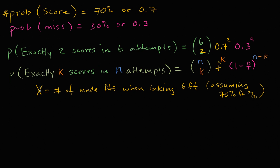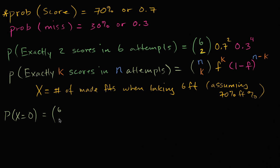So let's figure out the probabilities of the different values that x could actually take on. What is the probability that x is equal to zero — that even though you have a 70% free throw percentage, you make none of the shots? This is going to be six choose zero, times 0.7 to the zeroth power, times 0.3 to the sixth power. Six choose zero is one, and 0.7 to the zero is also one, so you're just left with 0.3 to the sixth power.